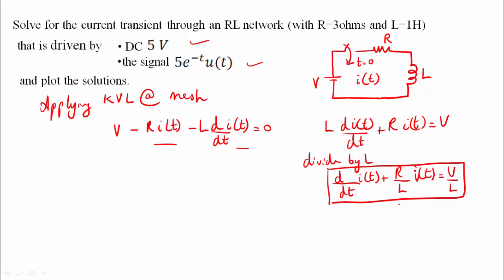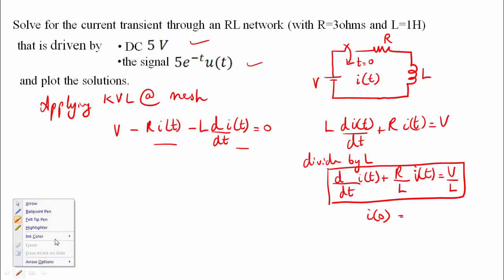I of t at t equal to 0 is equal to 0. The initial condition is i(0) equal to 0. When we switch on the circuit, initially no current flows because the inductor can be considered as an open circuit.